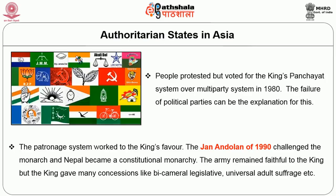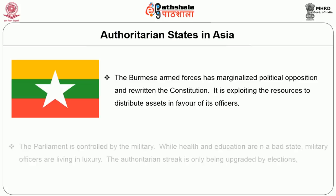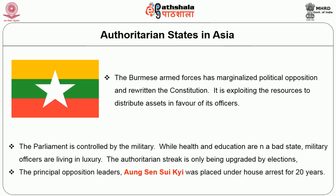The army remained faithful to the king, but the king gave many concessions like a bicameral legislature, universal adult suffrage, etc. In Burma, the authoritarian state can be seen clearly in practice. The Burmese armed forces have marginalized political opposition and rewritten the constitution, exploiting resources to distribute assets in favour of its officers. The parliament is controlled by the military, while health and education are in a bad state and military officers live in luxury. The authoritarian streak is only superficially upgraded by elections. The principal opposition leader, Aung San Suu Kyi, was placed under house arrest for 20 years.